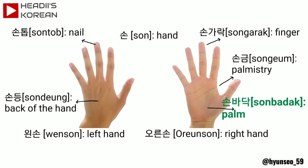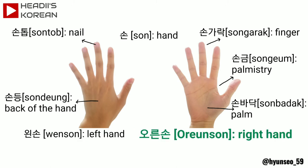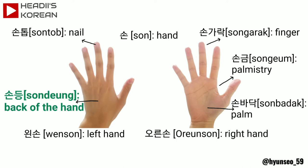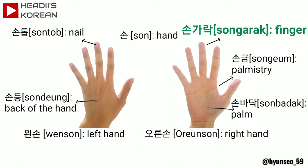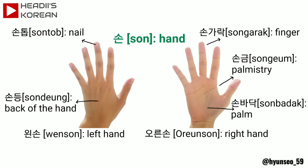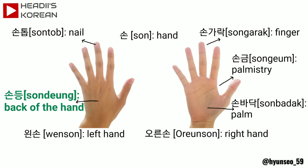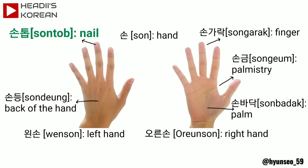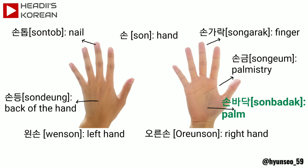Let's try this again! 손 — hand. 왼손 — left hand. 오른손 — right hand. 손등 — back of the hand. 손톱 — nail. 손가락 — finger. 손금 — palmistry. 손바닥 — palm. It was fast!